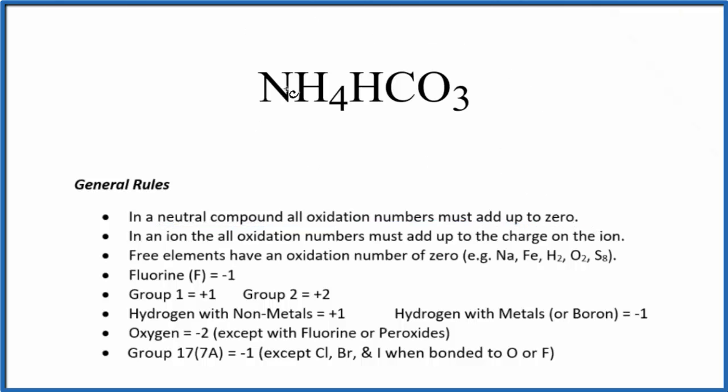The trick to figuring this one out here is to think of it as two different ions. So we have the ammonium ion, which has an ionic charge of 1+, then the hydrogen carbonate, or the bicarbonate ion, which is 1-.